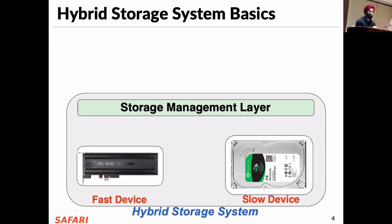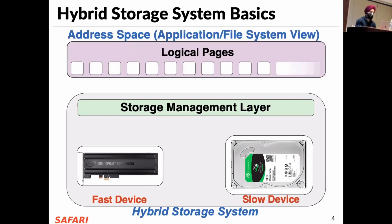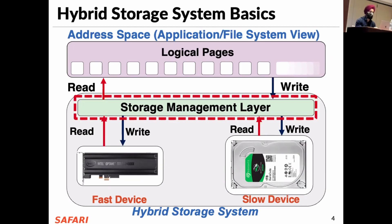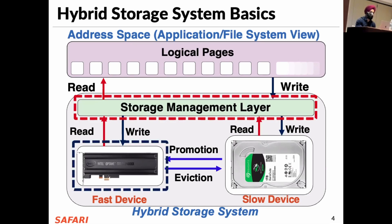Let's look at some of the basics of hybrid storage systems. Here we have a typical hybrid storage system consisting of a fast yet small storage device and a slow yet large storage device. The address space is divided into a number of logical blocks which are assigned to applications. The storage management layer is responsible for the orchestration of host I/O requests across heterogeneous devices. It also manages the promotion and eviction of data from the fast and the slow devices. A desirable policy has to effectively utilize the low latency characteristics of the fast device while making optimal use of its small capacity, and should also provide easy extensibility to a wide range of workloads and different hybrid storage system configurations.